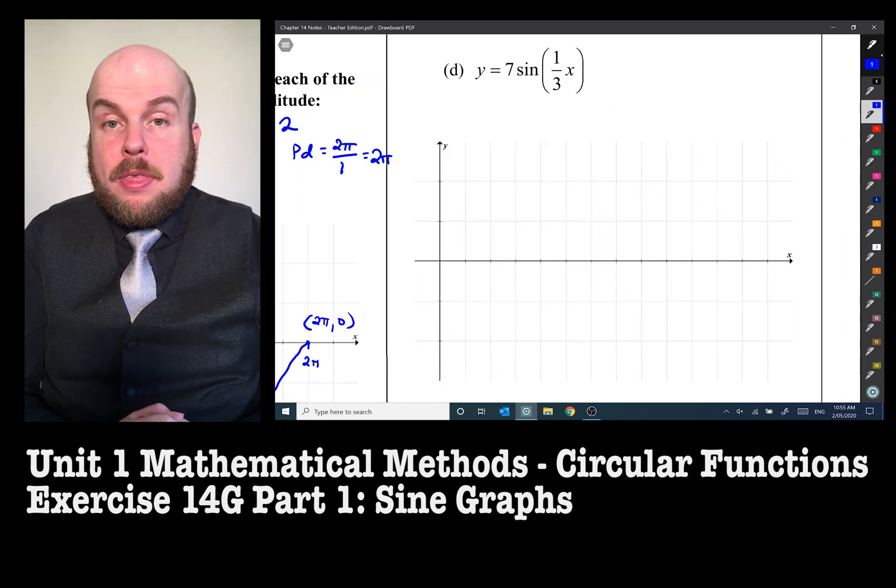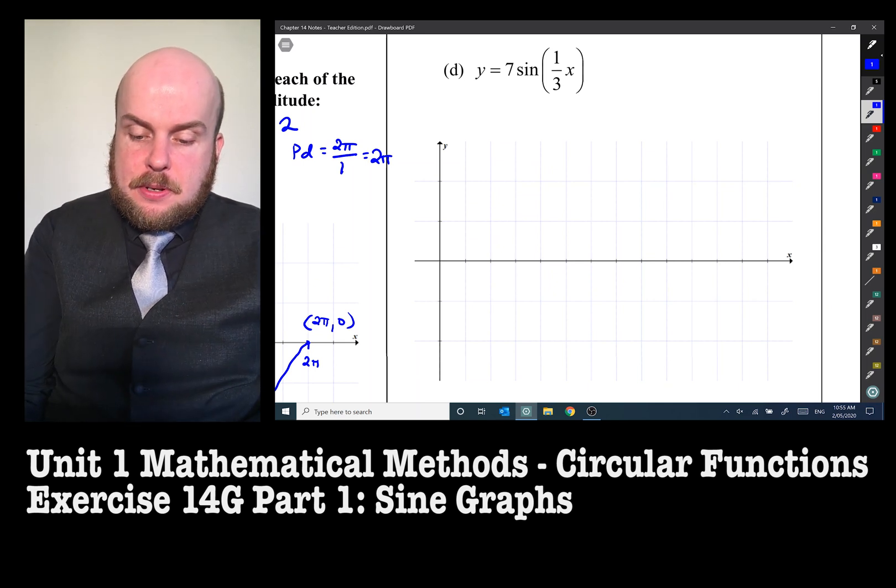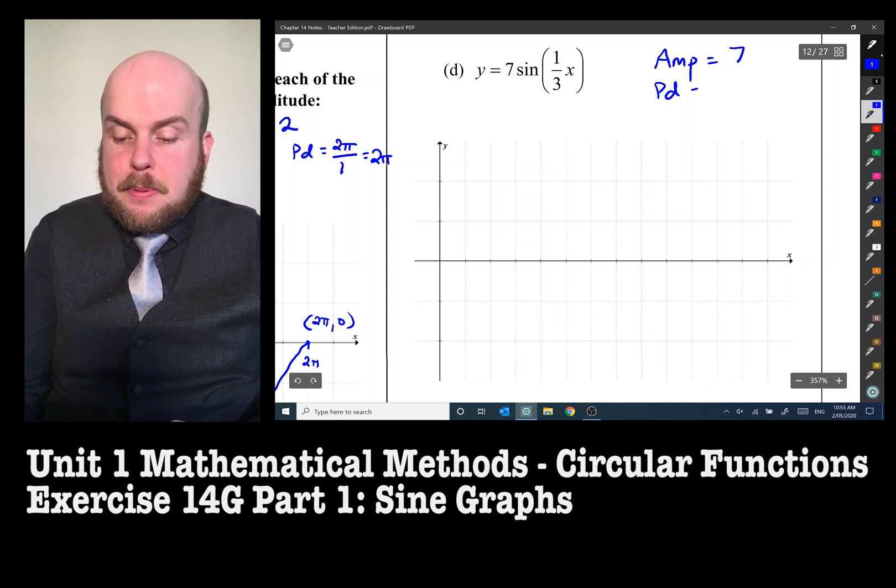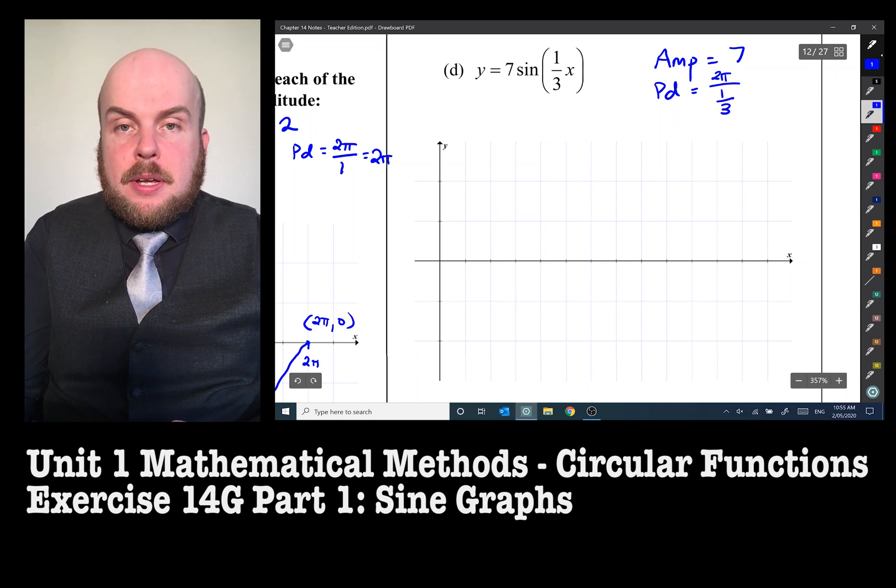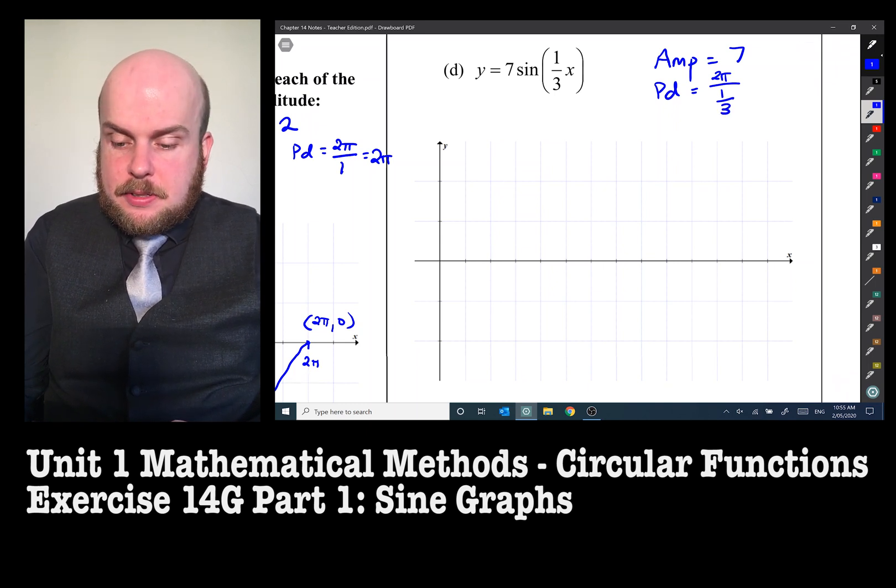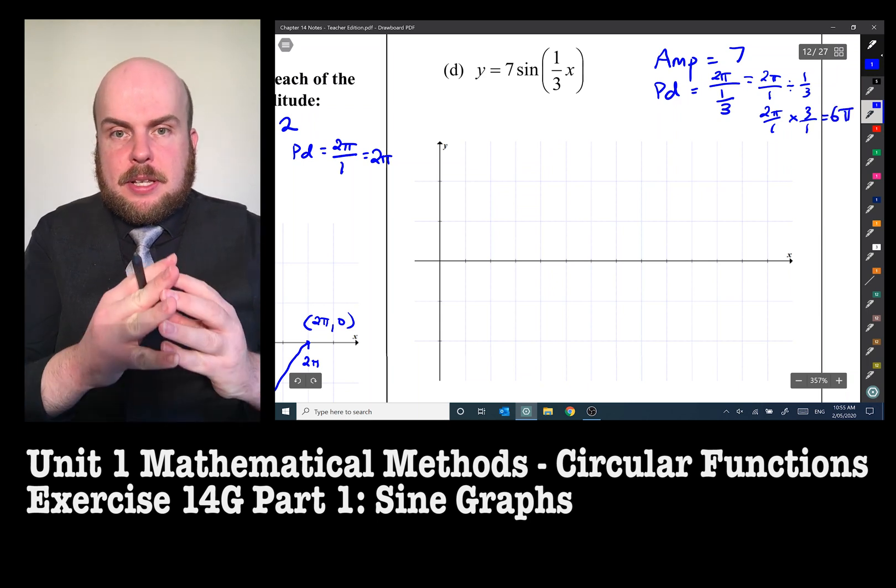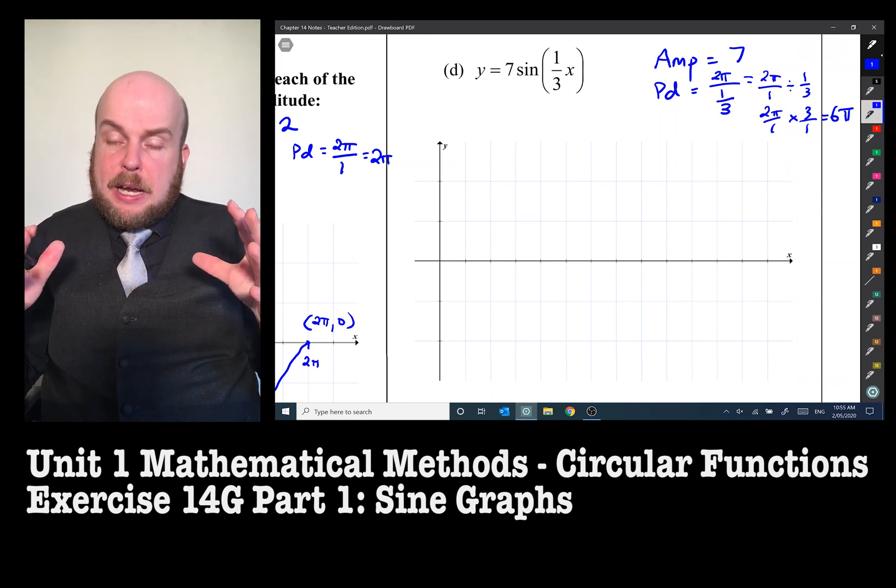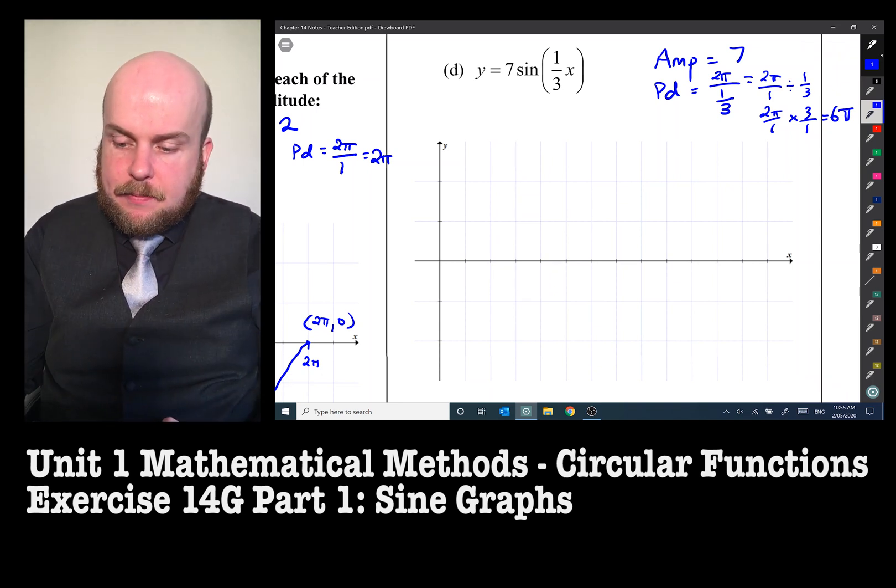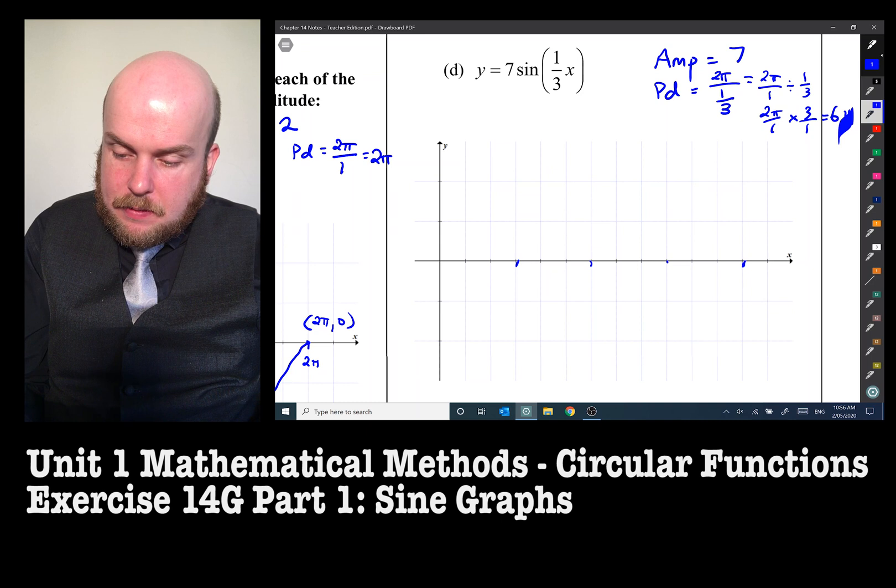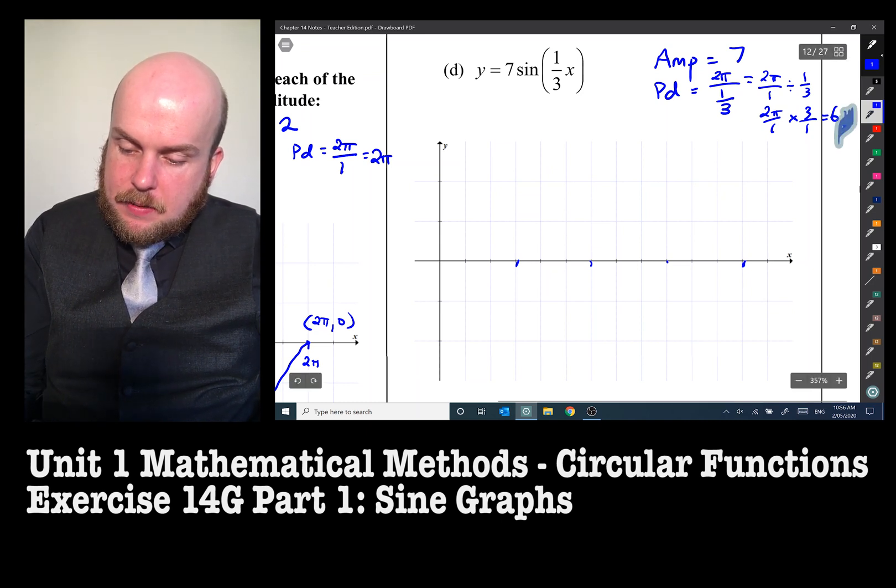Y equals seven sine one third x. So the amplitude is equal to seven. The period, now the period's interesting because it's two pi divided by one third. And if you know about dividing fractions, that's the same as saying two pi over one divided by one third, which is two pi over one times by three over one, which will be equal to six pi. So it's actually stretched out the graph. Whereas when it was eight, it was shrinking the graph incredibly. Again, I've gone and separated my graph into approximate quarters. So there we've got, it's got a bit smeary over here, six pi.